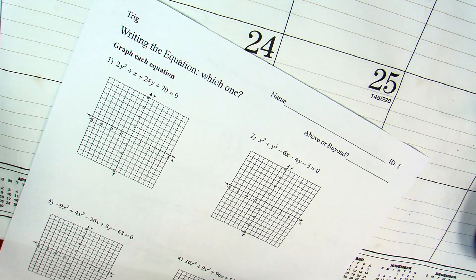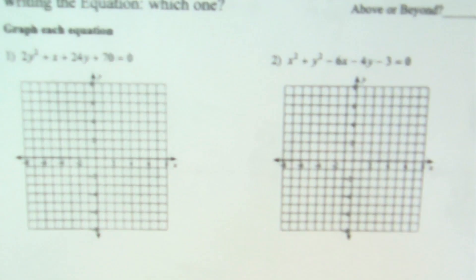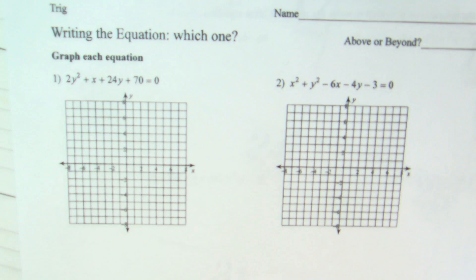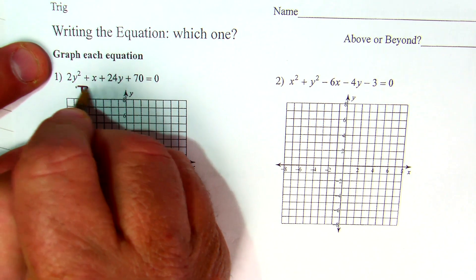So, if we come here right in the equation, which one? If we look at number one, is there only one squared? That's got to be a parabola. Good.